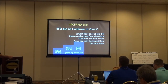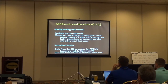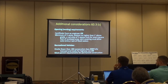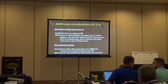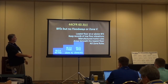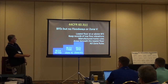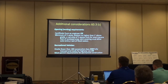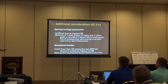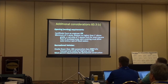Here are some additional considerations at 60.3 — venting requirements. Minimum of two vents, the bottom of which is no higher than one foot above the grade. A net area of one square inch for every square foot of enclosed area. And the vent covering must allow auto entry and exit of floodwaters. So if I have a thousand square feet of area, the number of square inches of venting depends on the type of vent — whether it's a concrete block or an engineered device.